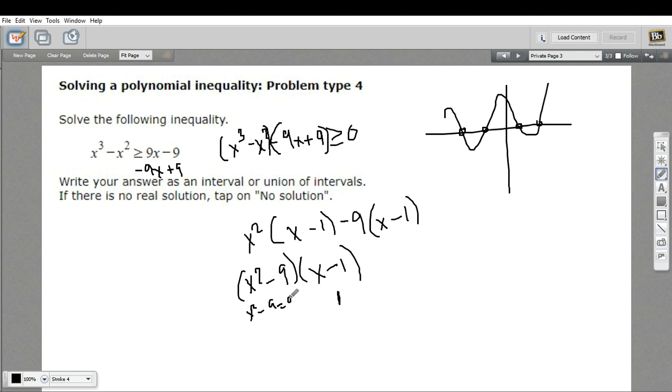I would add 9 to both sides. And I'd get x squared equals 9. And then I'd take the square root of that. And what I would get is x equals a positive or negative 3. So I've got three zeros here, three points where this crosses or touches the x-axis.